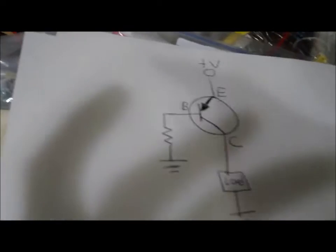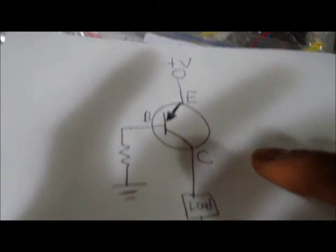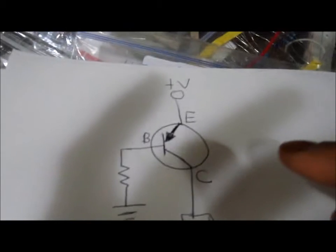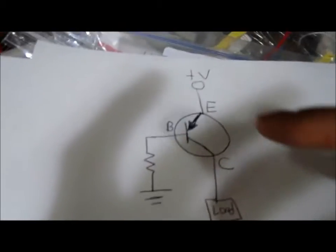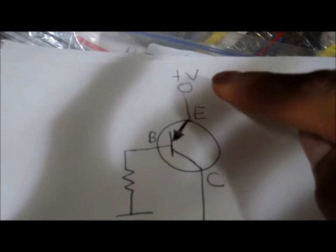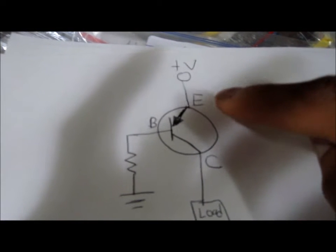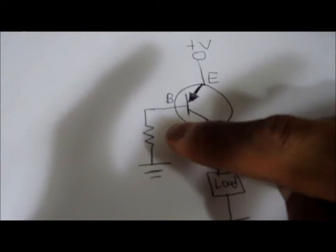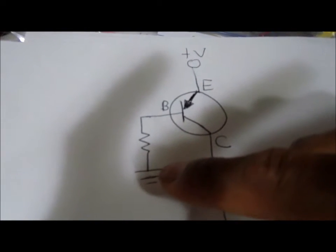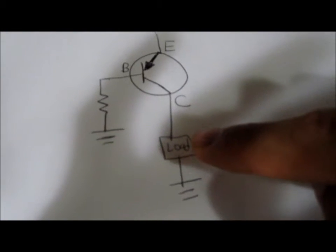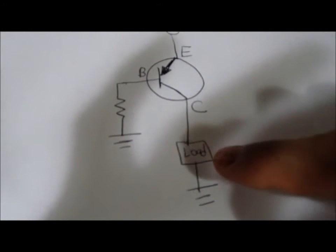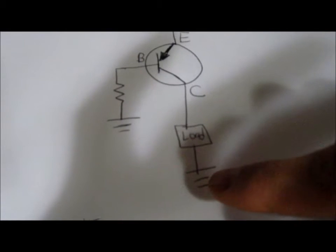This is the diagram of how we'll set up our PNP transistor in a circuit to power a load. To the emitter terminal we connect positive voltage, to the base terminal we connect it to ground through a resistor, and to the collector terminal we connect our load which will then be connected to ground.